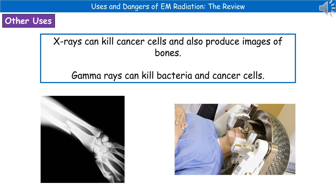Thinking about x-rays, we can use them to produce an image of a bone to identify if it's broken, as you can see on the left. We can also use x-rays to kill cancer cells. The last type we'll consider is gamma rays, which we generally use to kill bacteria on food that we can't heat up, and also to kill cancer cells using a device called a gamma knife, which you can see in the bottom right.